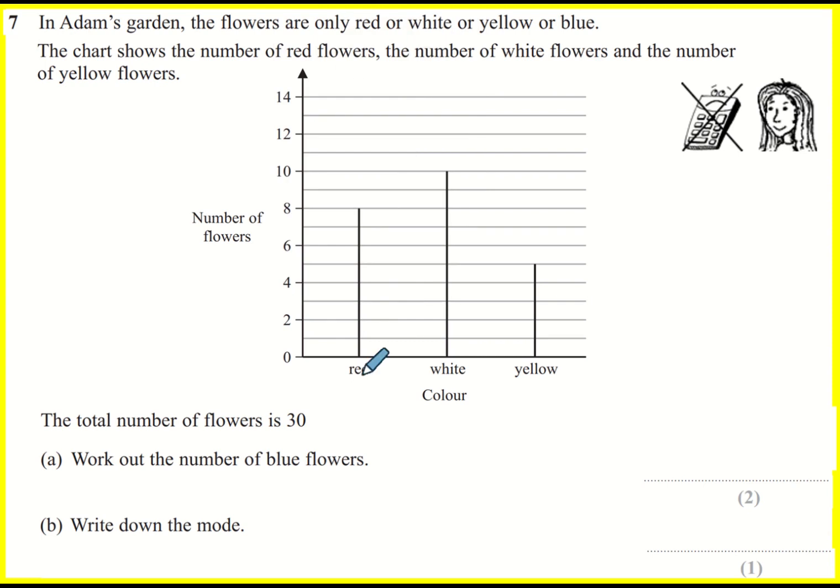So I'm going to read off the chart here. Red, it appears that there are eight, okay, eight red flowers. White, it appears that there are ten. And yellow, it appears there are, you read across here, five. Okay, halfway between four and six must be five.